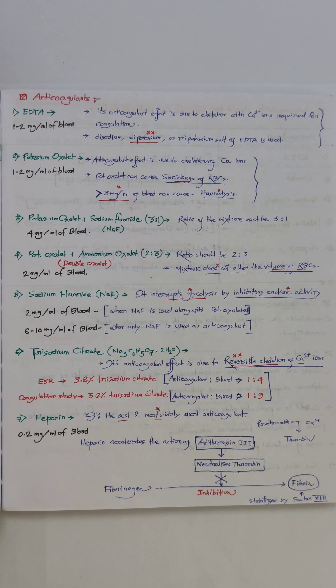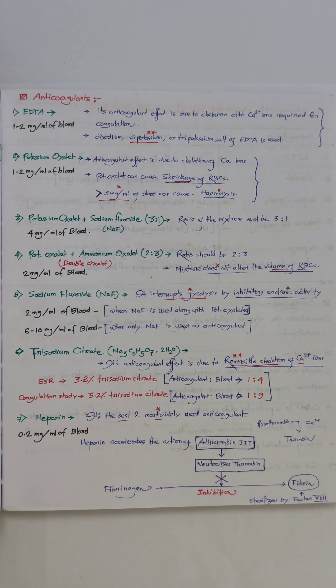Number five, sodium fluoride. Mode of action: it interrupts glycolysis by inhibiting enolase activity. If sodium fluoride is used only as an anticoagulant, its required quantity is 6 to 10 mg per ml of blood. But when sodium fluoride is used along with potassium oxalate, the required quantity is less, 2 mg per ml of blood.